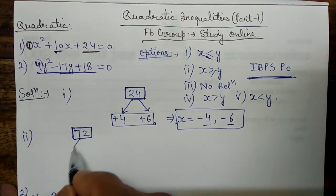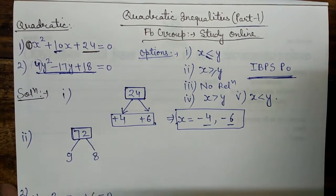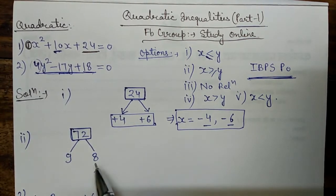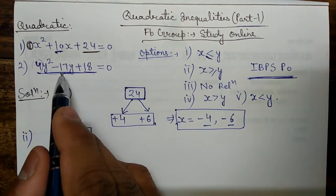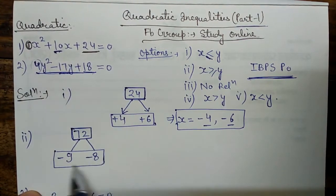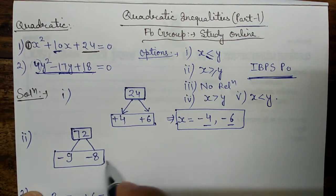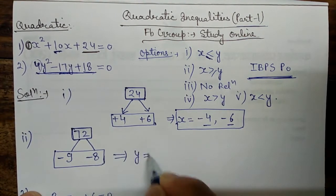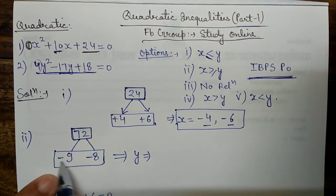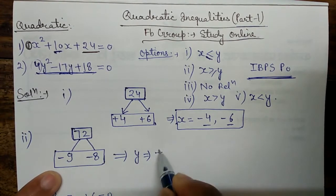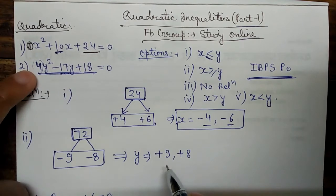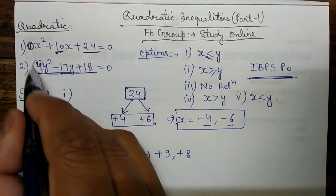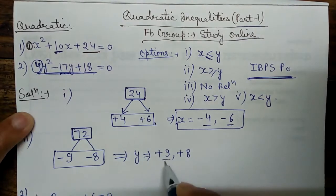If we divide 72 into 9 and 8, that gives 72 when multiplied. But the coefficient of y is -17, so the factors must be -9 and -8 — then adding gives -17. So the factors are -9 and -8, and these should be divided by the coefficient of y², which is 4.